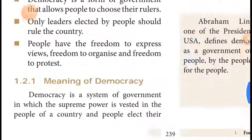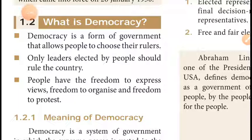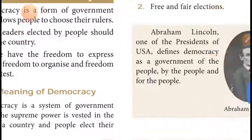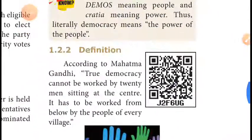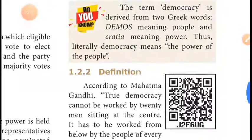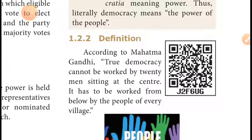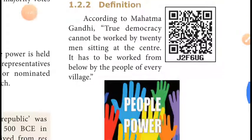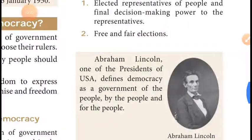To summarize what we have discussed: what is democracy, the meaning of democracy, the word 'democracy' derived from two Greek words — 'demos' meaning people and 'kratia' meaning power — while 'republic' is derived from a Latin word. Definitions were given by the father of the Indian nation Mahatma Gandhi and by Abraham Lincoln.